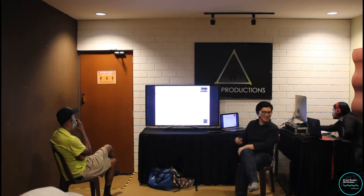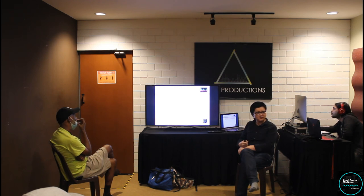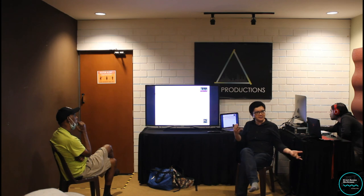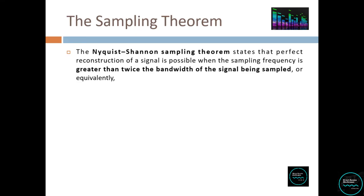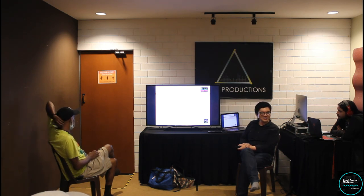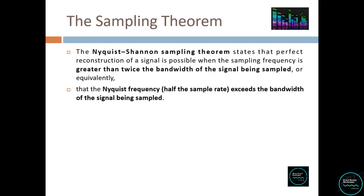How did scientists and engineers figure out numbers like 44,100 Hz? They used the Nyquist-Shannon theorem, which states that a perfect reconstruction of a signal is possible when the sampling frequency is greater than twice the bandwidth of the signal being sampled. Simply put: you need double the frequency. The Nyquist frequency is always half the sample rate — as long as it exceeds the bandwidth of the signal being sampled, you can recreate it perfectly.